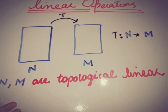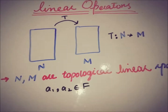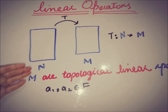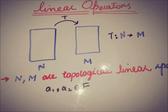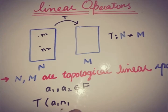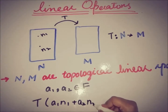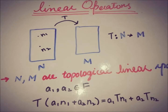So T is a mapping from N to M when N is a linear topological space. T is said to be a linear operator if we have two elements a1 and a2 from the field and two elements n1 and n2 from the linear topological space N, and the condition T(a1·n1 + a2·n2) = a1·T(n1) + a2·T(n2) is satisfied. This is the basic definition of linearity.